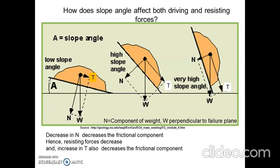With the increase in slope angle, the magnitude of N goes on decreasing, due to which the resistance offered will also decrease. Similarly, with increase in the tangential component T, there will also be a decrease in the frictional component, due to which the slope will not be stable at a very high slope angle beta.